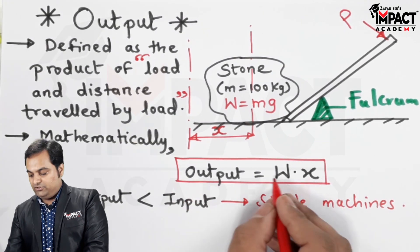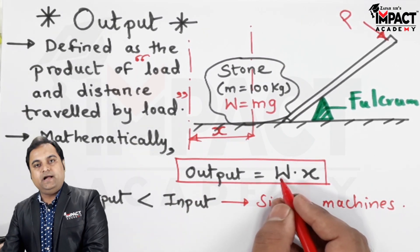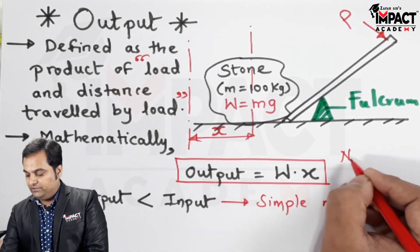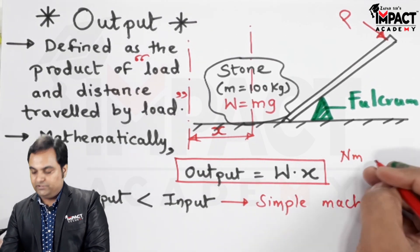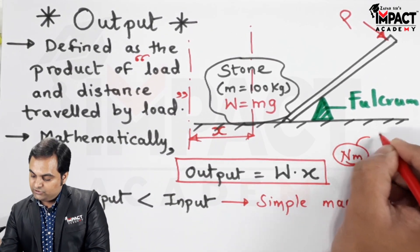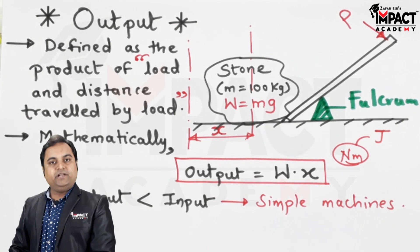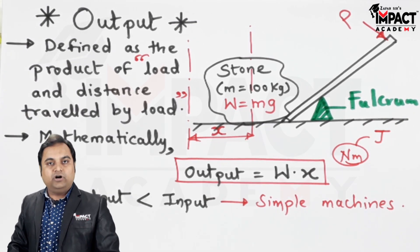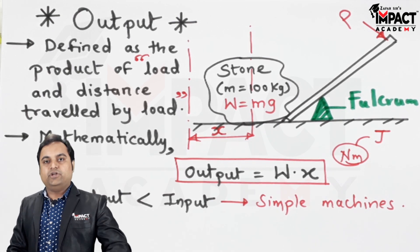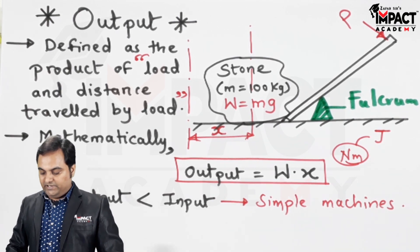And here the unit is: load I'm assuming it to be in terms of newton, distance X in terms of meter. So newton meter is joule, which is the unit of work. In other words, output can also be defined as the amount of work done in order to move the load from one location to another.